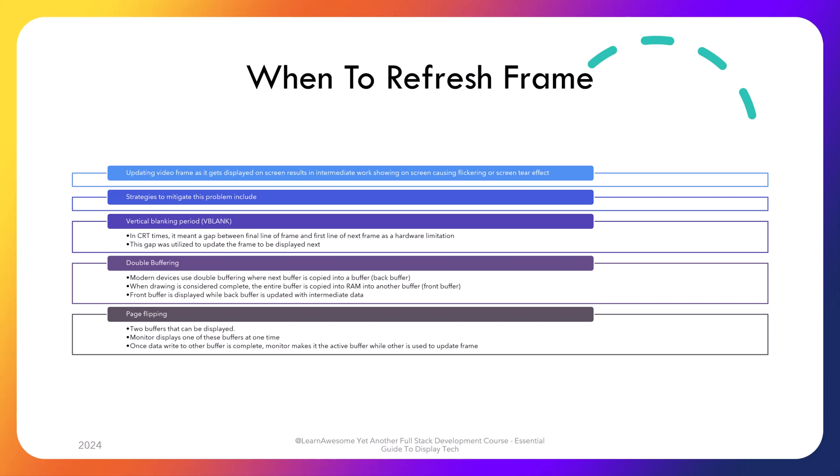In modern times, a technique called double buffering fixes the issue by using not one but two display buffers. Software updates a frame in a buffer called the back buffer, and when ready, its contents are copied to the active or front buffer in RAM during the refresh rate interval, avoiding glitches. An even better technique uses two display buffers both capable of displaying data — the next frame is written to the inactive buffer, and once complete it becomes the active buffer. This technique, called page flipping, almost entirely fixes flickering and screen tearing at the cost of additional memory.